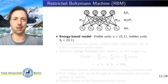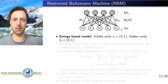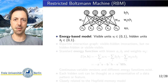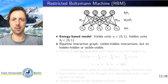The architecture looks like this. We have essentially two layers of neurons: visible neurons, which are mapped to the individual dimensions of our data object — for example, the pixels in images — and hidden neurons. The network is a bipartite graph: visible neurons are connected to all hidden neurons and vice versa, but they are not connected within these sets.